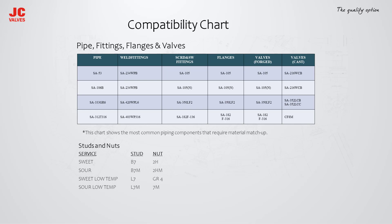The chart shows the most common piping components. For example, if the pipe is carbon steel SA106B, the butt-weld fittings are SA234 WPB, flanges are A105N, and valves will be A105 for forged and A216 WCB for cast. Fasteners will be A193 B7 and A194 2H for non-sour service, and A193 B7M and A194 2HM for sour service.